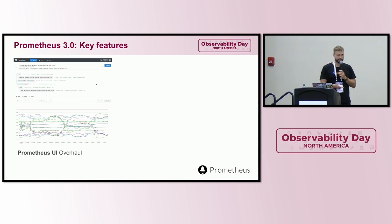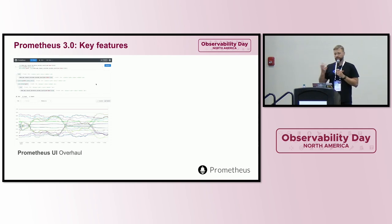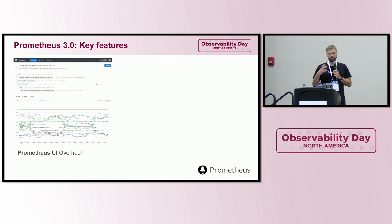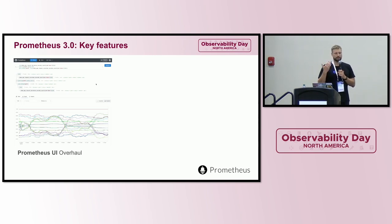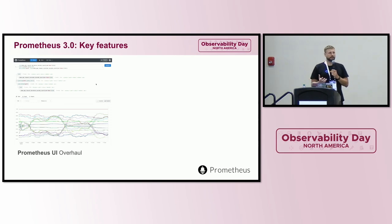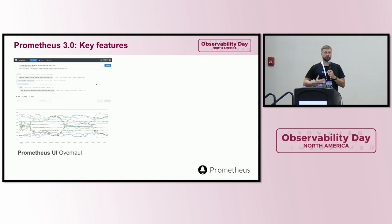The new UI is faster, more responsive, looks and feels more modern, and also has new features. The new features are around PromQL TreeView, Query Explanation, and Metric and Label Explorer — all to make it easy for you to access, explore, and understand your metrics and queries.